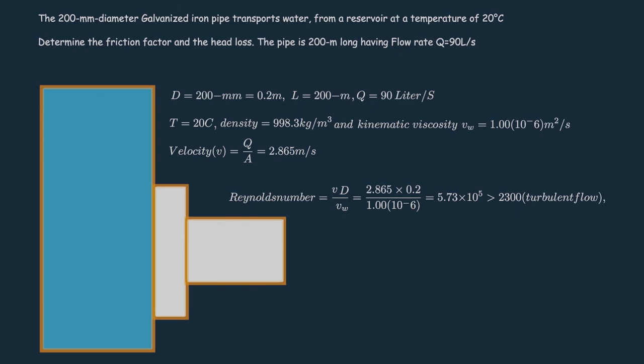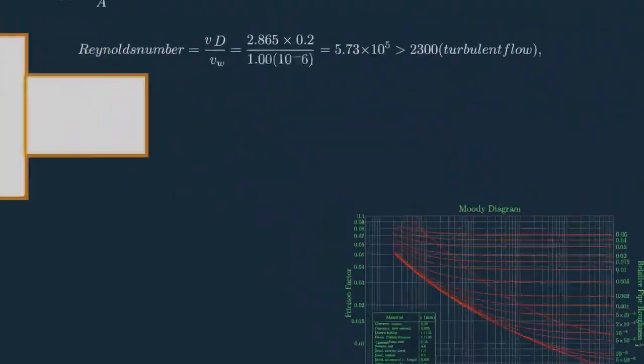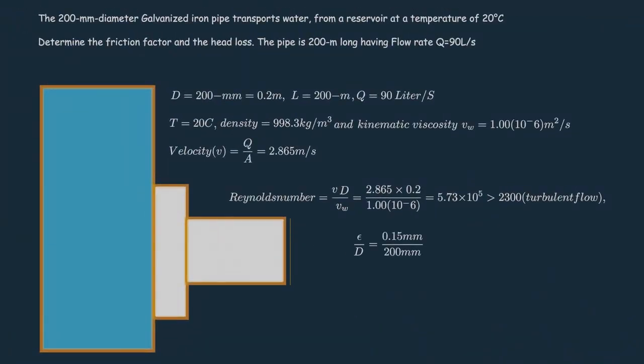Also our pipe is made from galvanized iron, so the mean surface roughness can be easily obtained from the table. Dividing this value with our internal pipe diameter we get the relative pipe roughness.